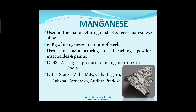Now we talk about manganese, which is also a type of metallic mineral. It is used in manufacturing of steel and ferro-manganese alloy. About 10 kg of manganese is used per 1 ton of steel. It is also used in manufacturing of bleaching powder, insecticides, and paints. Odisha is the largest producer of manganese ores in India — this is a very important fact. Other producing states include Maharashtra, Madhya Pradesh, Chhattisgarh, Karnataka, and Andhra Pradesh.